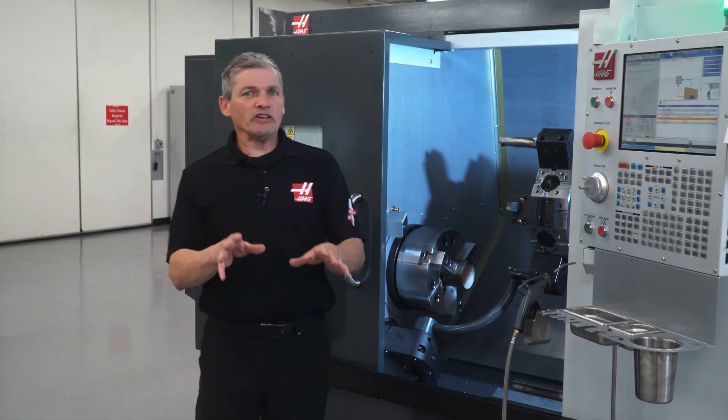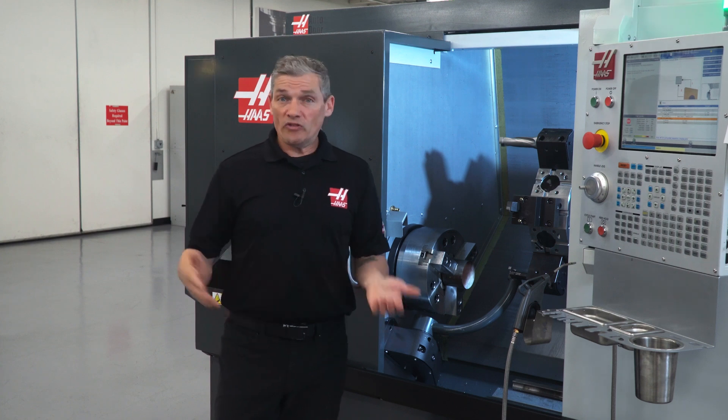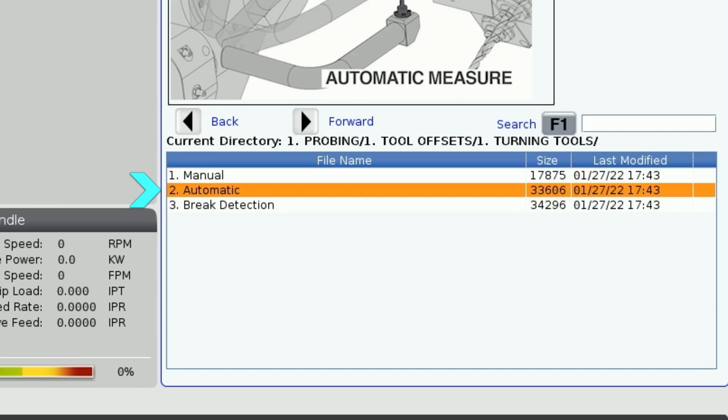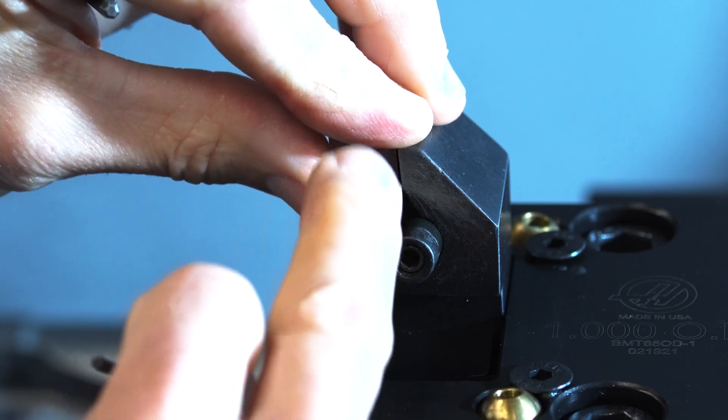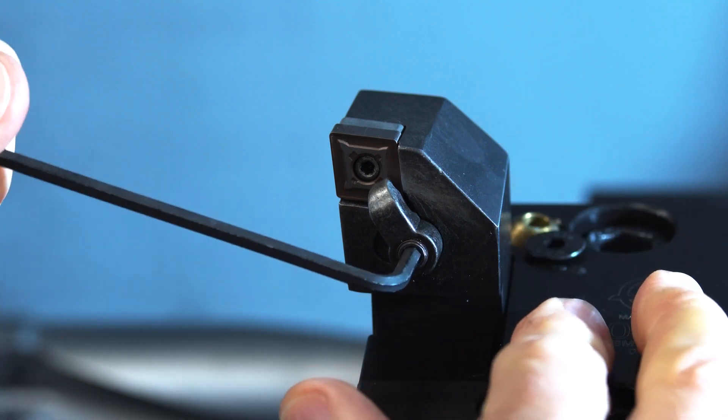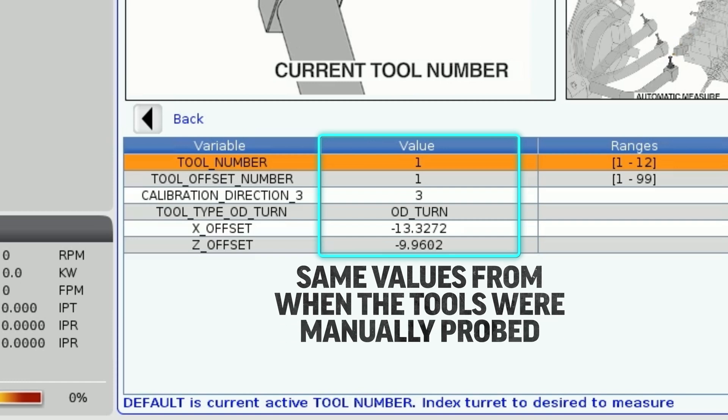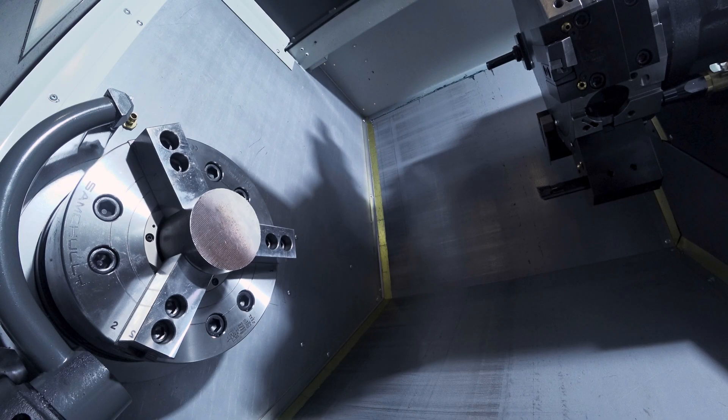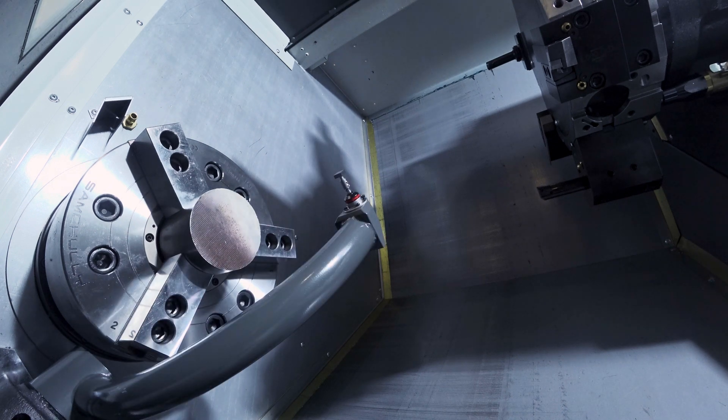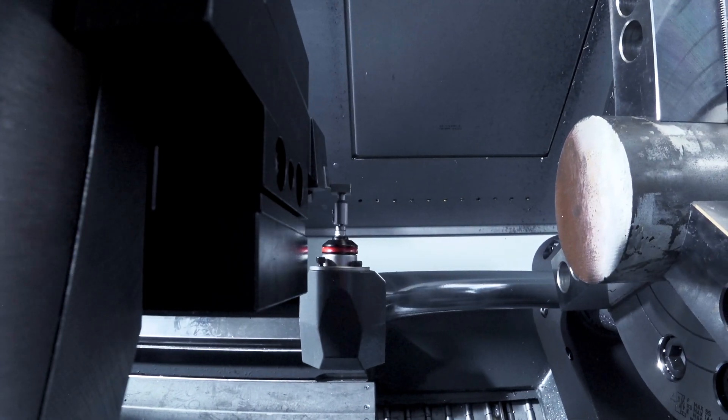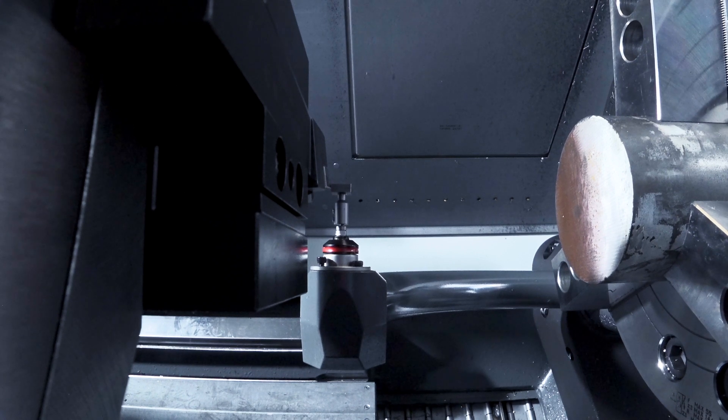But that's not all ATP has to offer. Once I've set the offsets for a particular tool, updating those offsets is even easier in automatic mode. Let's say my tool 1 insert just wore out. I change my insert and then go to automatic mode with tool 1 active. The control already knows where this tool is. So I simply hit cycle start and the probe arm deploys automatically. The tool moves in and touches off on the probe, and the offsets are updated to reflect the new insert position.